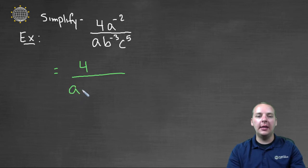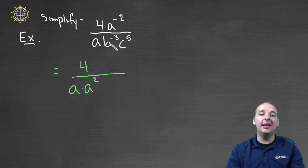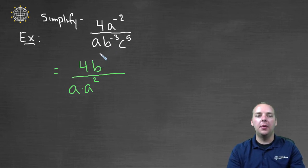So we'd have a already, this is this a, times a to the positive two. This b to the negative three in the denominator will come up to the numerator and become a positive three. And then c to the fifth is already a positive exponent, so we'll leave it just like it is.